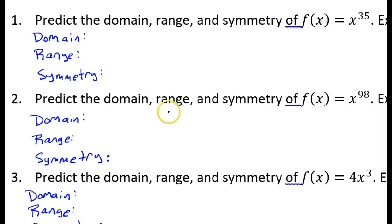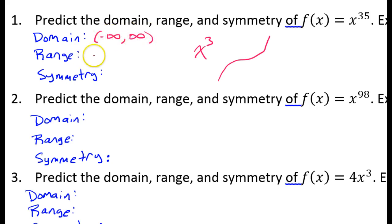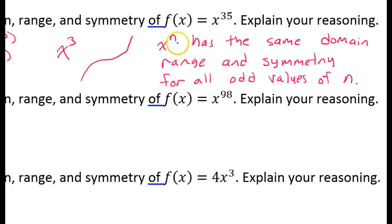Based on what we've seen, we can predict the domain, range, and symmetry for many other functions. x to the thirty-fifth power — as soon as we see that it is an odd degree, we know it's going to have the same domain, range, and symmetry as x to the third power. So all odd degree functions: domain is negative infinity to positive infinity, range is negative infinity to positive infinity, and the symmetry is odd. In other words, x to the n power has the same domain, range, and symmetry for all odd values of n.